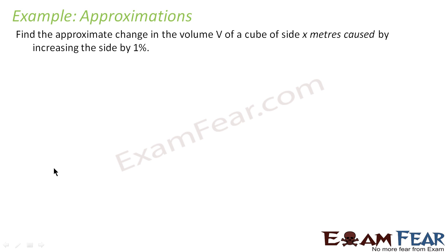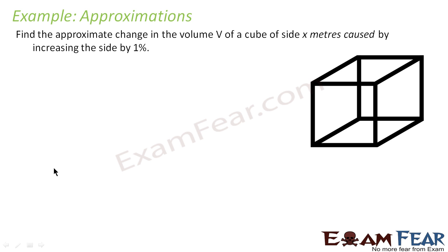Let's take one more example. We have to find the approximate change in the volume of a cube of side x meters caused by increasing the side by 1%. This is the cube I have, and the side is x. I am increasing the side by 1%. All sides are increasing by 1%. So this became this. This length also increased, the height also increased. So the new cube which you get will be something like this. Everything is increased by 1%.